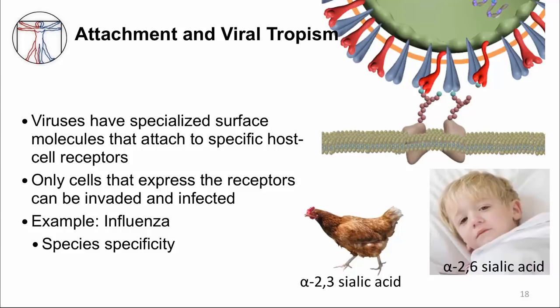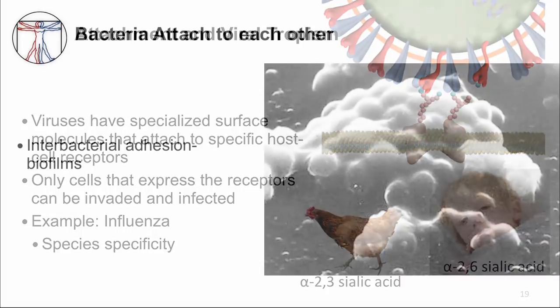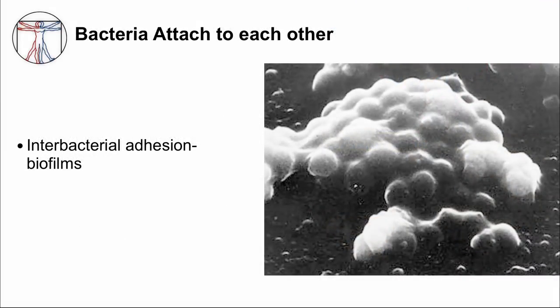This interaction is so specific that variations in the sialic acid arrangement determines which species of animal an influenza virus can infect. Avian influenza viruses cannot easily infect humans. Now, during establishment of infection, attachment can occur between microbes and the host, but also between each other and even to foreign material. Some bacteria can secrete mucoid compounds that glue them together, forming specialized bacterial communities called biofilms.